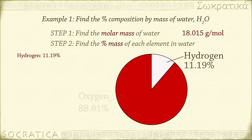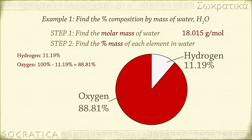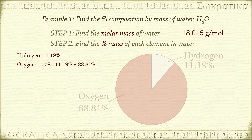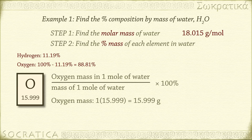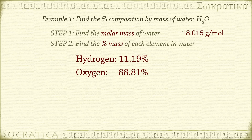The rest of the mass must be due to oxygen: 100% minus 11.19% equals 88.81% of the mass of water is due to oxygen. But let's check just to make sure. There is one atom of oxygen in each water molecule, so that is 1 times 15.999 equals 15.999 grams of oxygen in each mole of water. 15.999 divided by 18.015 times 100% equals 88.81% — right on the nose. The percentages do add up to 100%: 11.19 plus 88.81 equals 100%, so we didn't mess up anywhere.